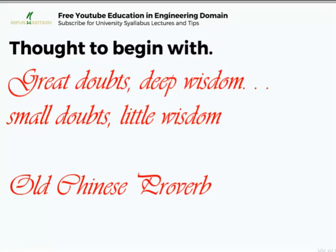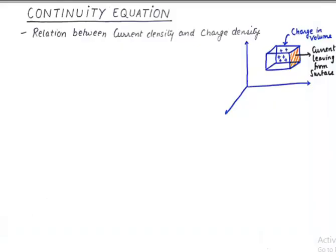Let's get a brief idea of what is happening here and what is the meaning of continuity in this equation. To understand that, we consider a cube with some charge in that volume. These positive signs are representing charge in the volume and their charge density could be rho V, and the total number of charge is let us say Q.